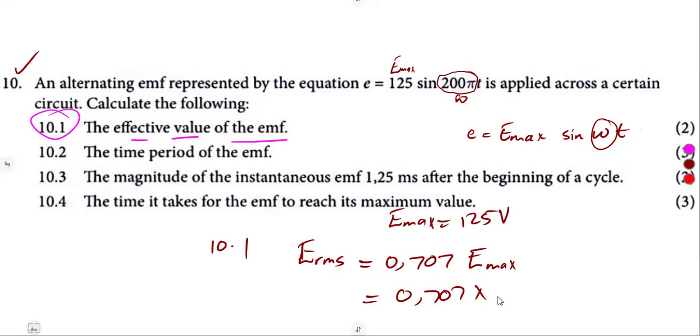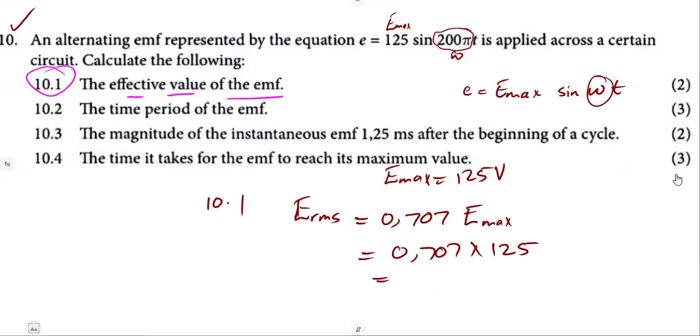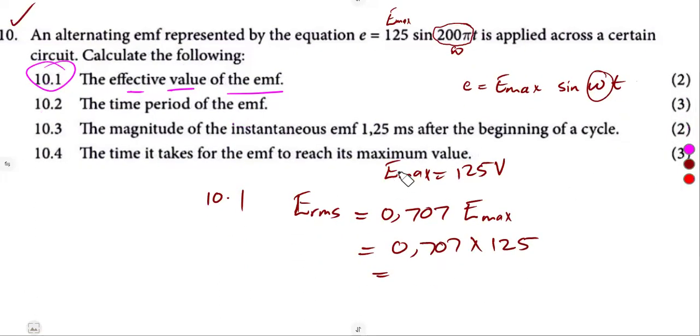So some textbooks can use this one as V_P, like E_P for peak value. Just use the way you have from your textbook. So that was going to give us 88.375 volts. So we've got the RMS value, which is our effective value.